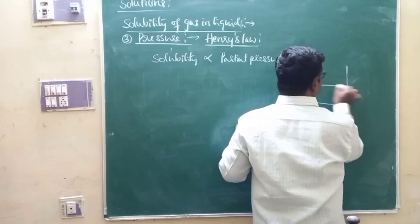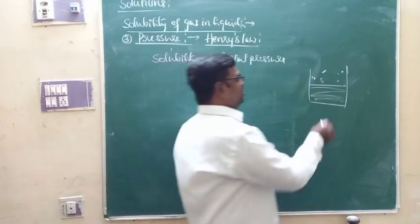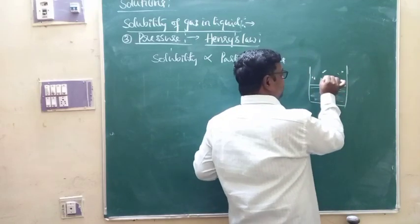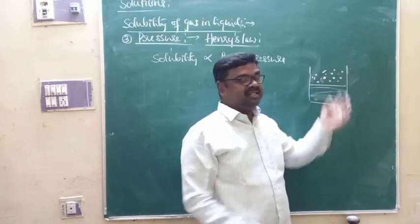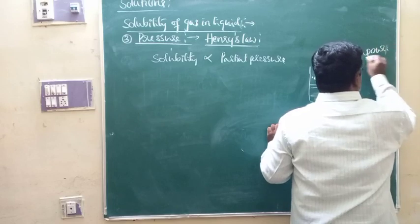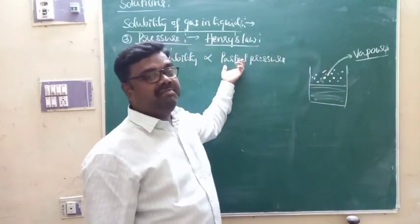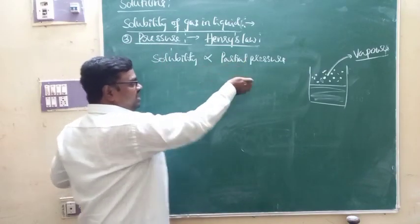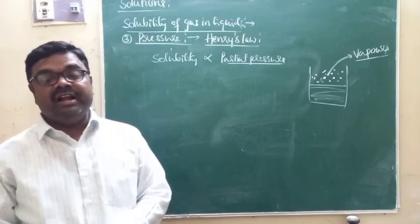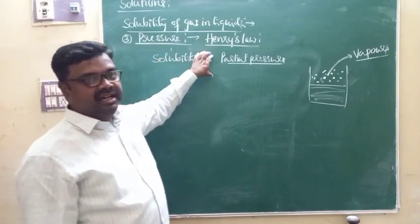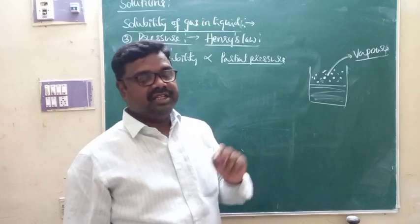Above the surface of a liquid, you find not only gaseous molecules but also molecules of the liquid. This region is called the vapor phase. That is why we use the term 'partial pressure of a gas in vapor phase.' So Henry's Law states: solubility of a gas in liquid is directly proportional to partial pressure of a gas in vapor phase at constant temperature.